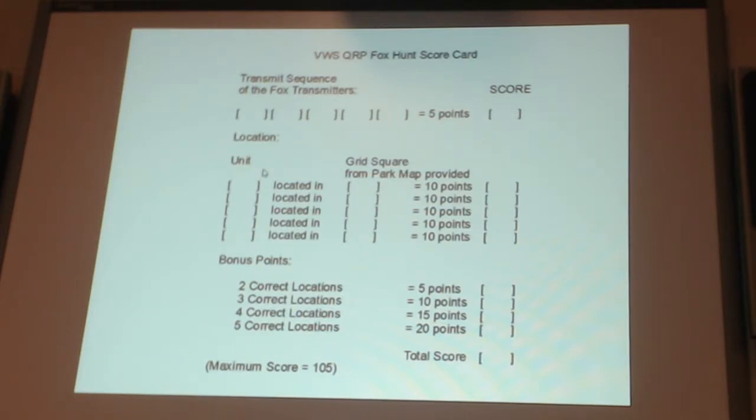The next one is did you locate the transmitter into the correct grid square? So here you just put in the name of the transmitter and you say he's located in grid square C4 or F5 or whatever. If you did it correct, give yourself 10 points. You try to locate all five of them. Down here you get some bonus points if you get more than one correct. If you got two correct locations, you could add five points. If you got three correct locations, you could add 10 points. And remember, these add up. Look at the total score. The maximum score is 105.